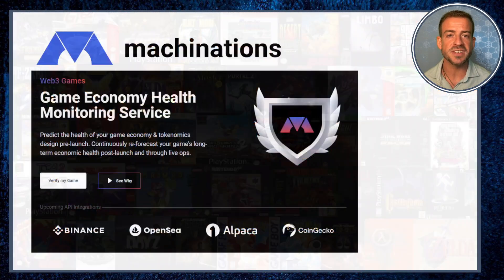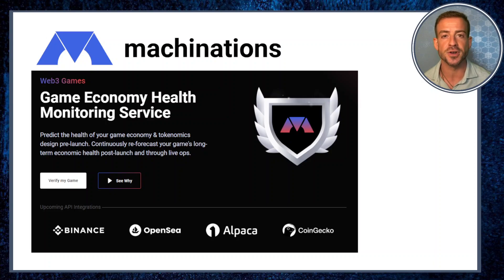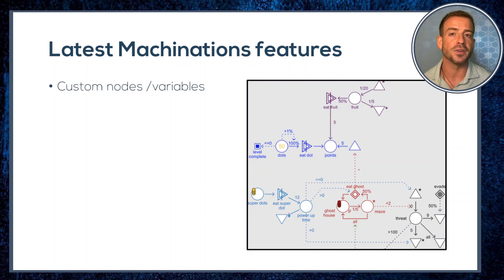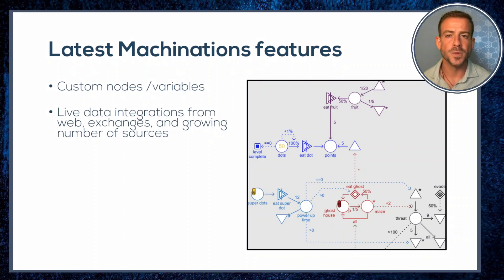The Machinations team realized it would only take a small pivot to add features making it ready for modeling in Web3 and blockchain. They have already committed considerable capital and R&D behind that effort. The last major update greatly expanded modeling capabilities through an overhauled custom variables feature, which allows for richer process specifications as well as live data integrations — including the ability to pull live trading data for blockchain assets.